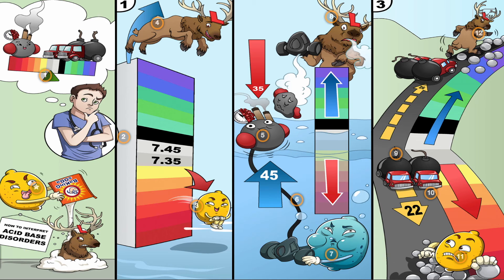If pCO2 is going in the same direction, or is normal, skip to the third step and evaluate HCO3, bicarbonate. If bicarbonate is going in the same direction as pH, it's likely a metabolic disorder.